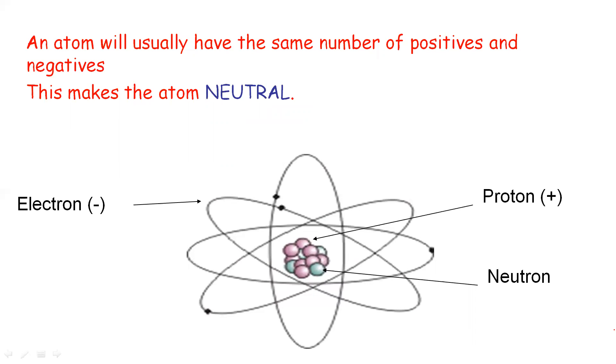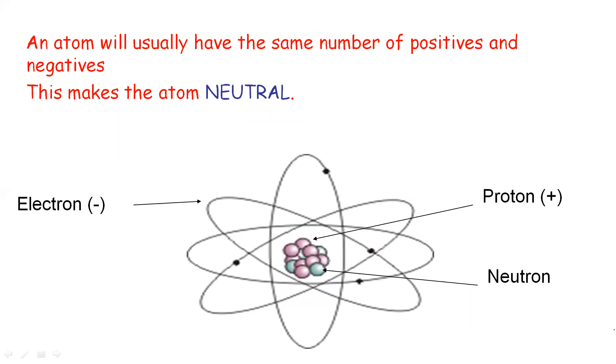The total charge is neutral, which means the atom is neutral. When an atom gains or loses electrons, it becomes an ion — either a positive ion or a negative ion.